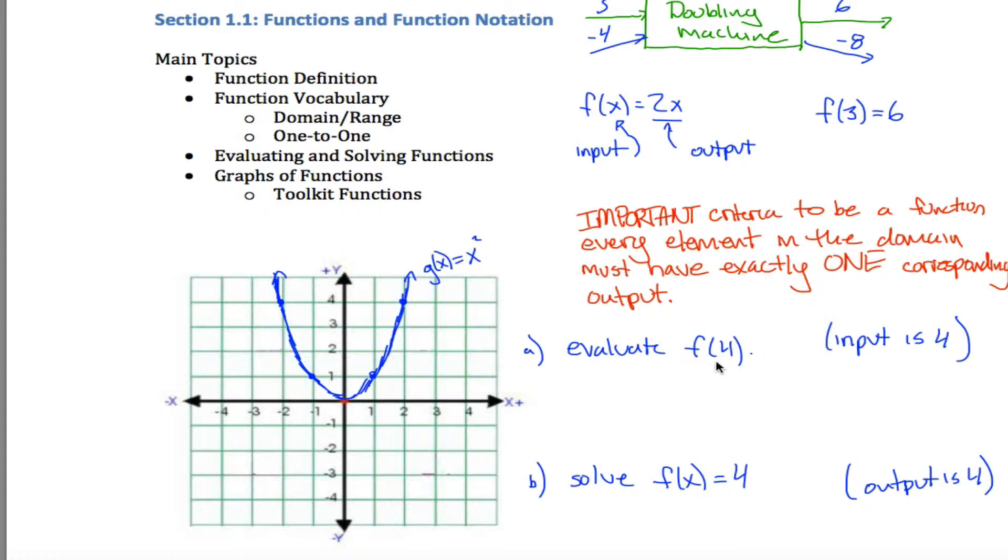So when I'm asked to evaluate f of 4, all I got to do is think about what will come out of my doubling machine, because that's the machine that I'm talking about in this example. When I put 4 into it, you'd be like, well, 4 doubled is 8, yeah, that's true. You could just think about it that way. Maybe a better way to think about it is this is kind of the blueprint of my function. So when I put x in, what comes out is 2x.